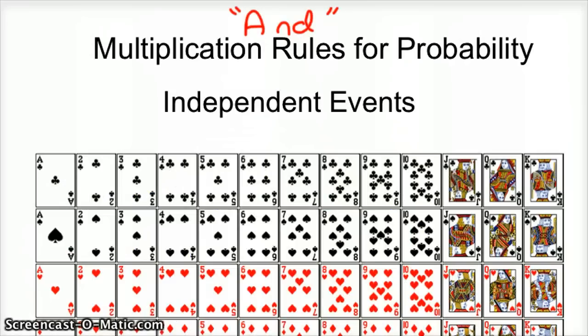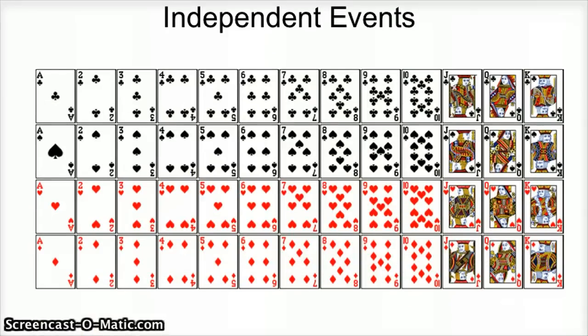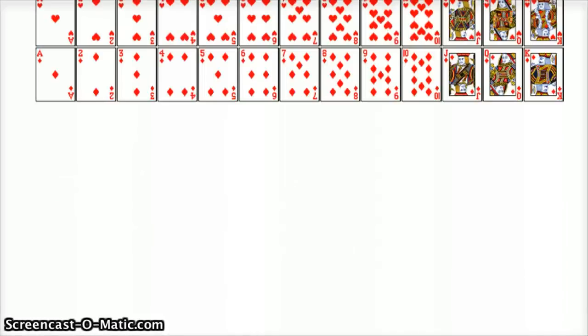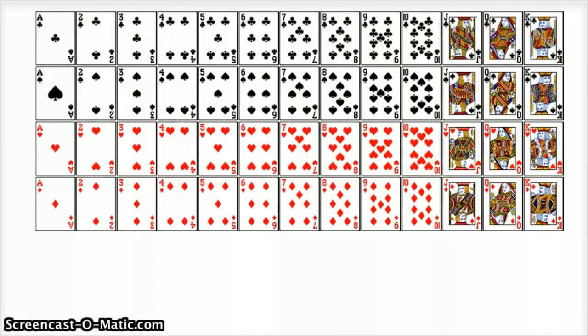We'll talk about dependent a little later. We'll just stick with independent for this video, because dependent's a little more complicated and takes some more time. So let's head back to the deck of cards now. With independent events and cards, you're going to draw a card, then put the card back in the deck, shuffle them up, and draw another card.